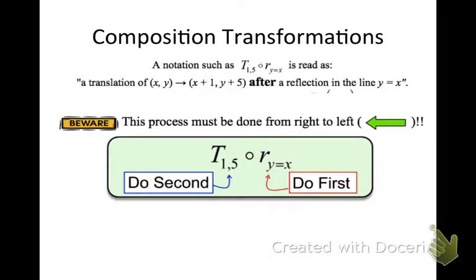Now, when you see translate one to the right, five up, after a reflection over y equals x, you know that you have to do the reflection first. So whatever is mentioned second, you do first. Whatever is mentioned first, you do second. It is just backwards of what you think it should be. So be very careful of that when you're doing your composition transformations.